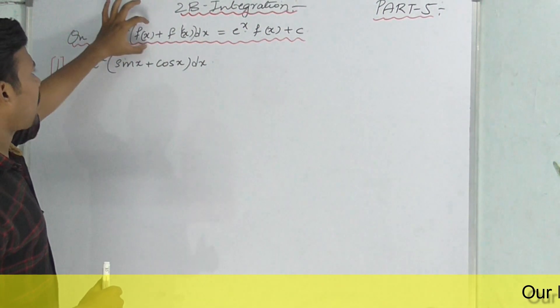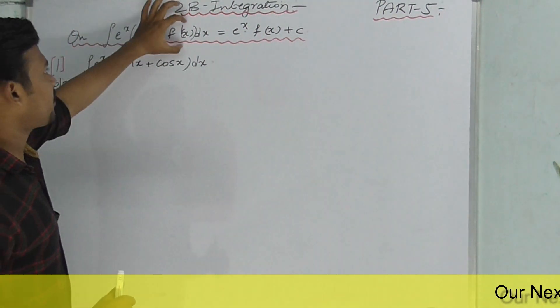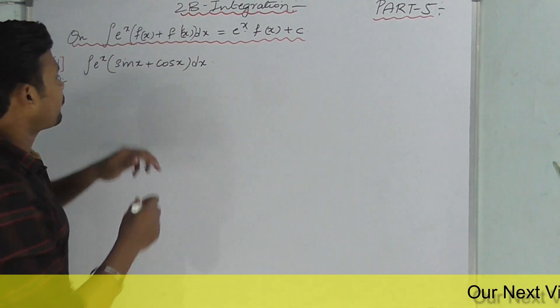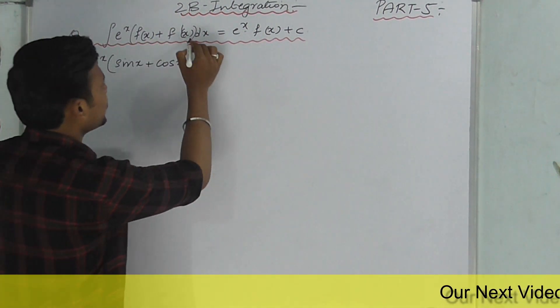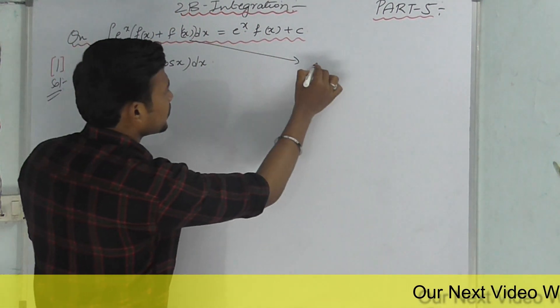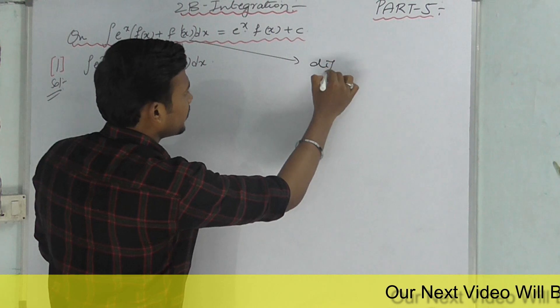Integral e^x times [f(x) + f'(x)] — here f'(x) is the differentiation of f(x). f'(x) is the same as the derivative of f(x).